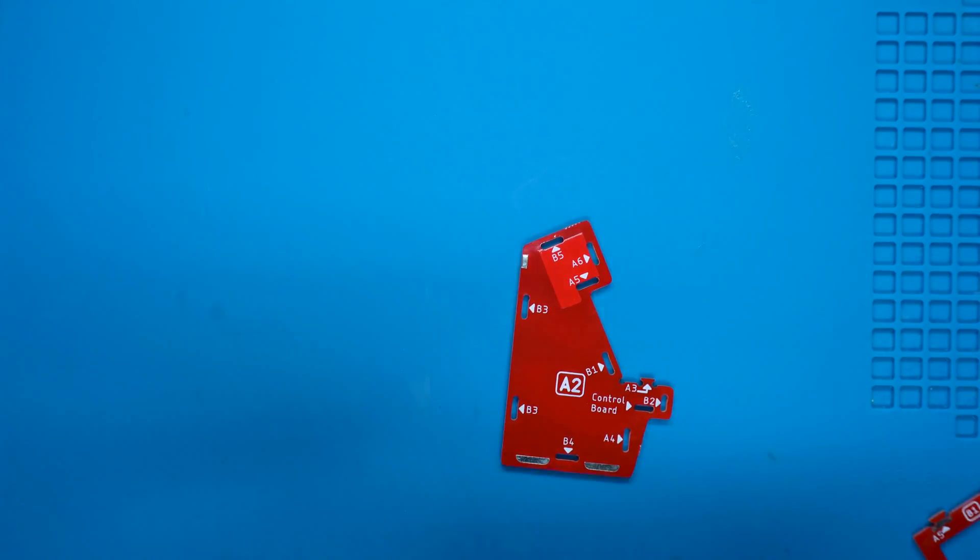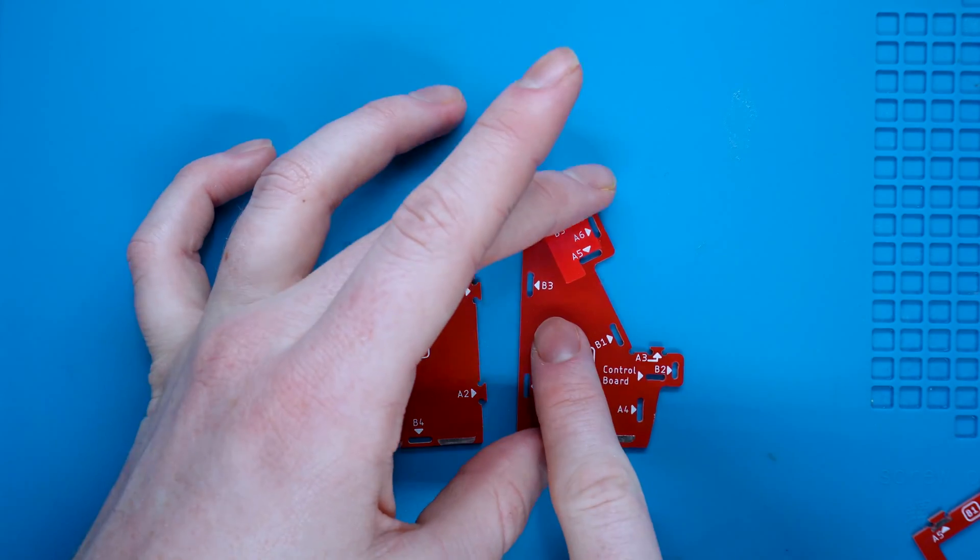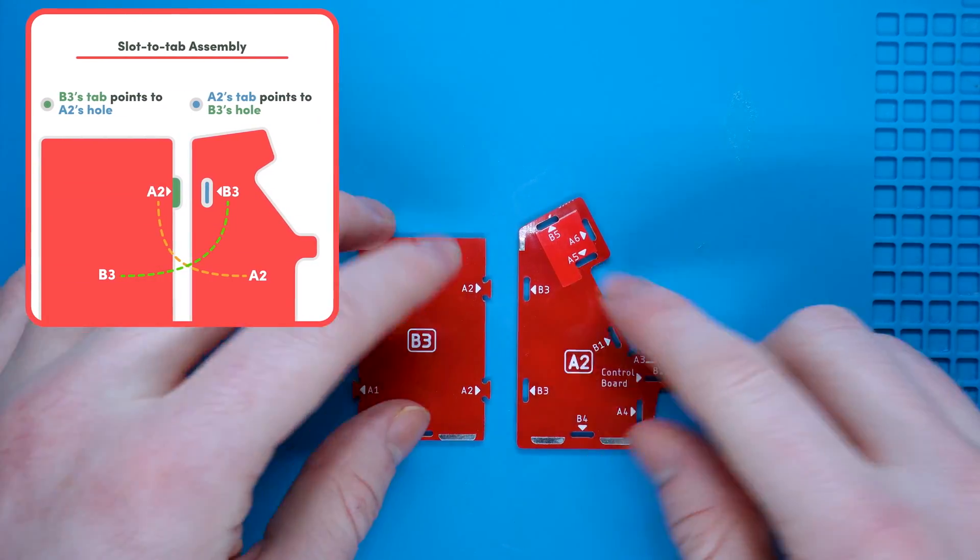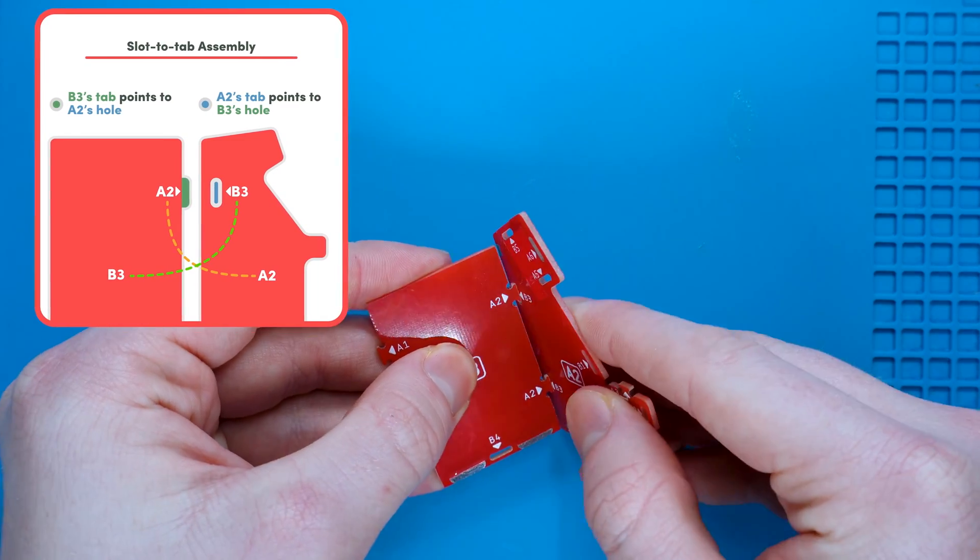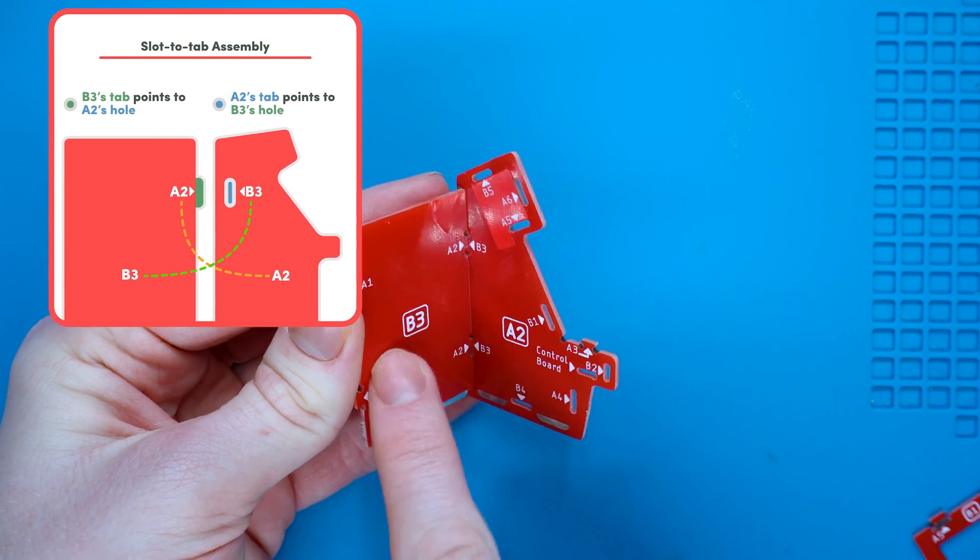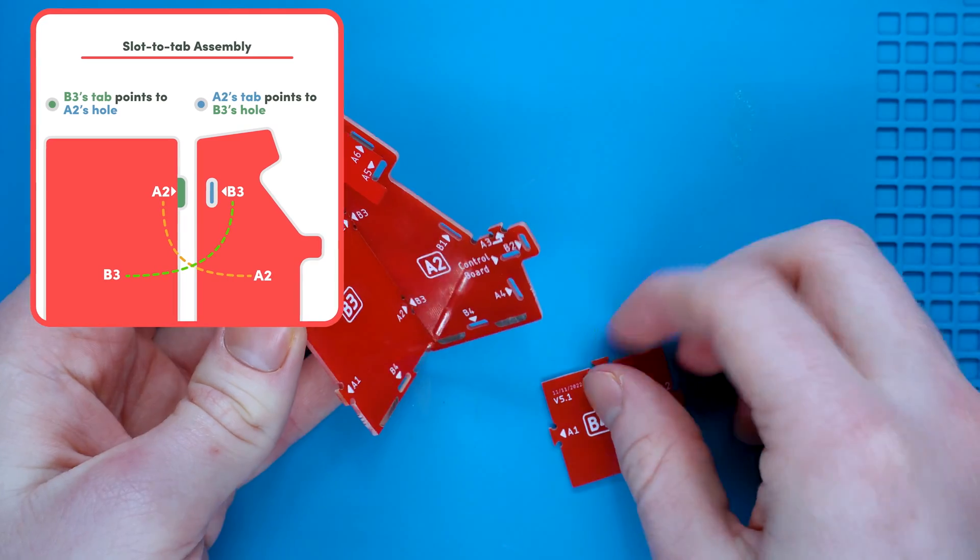The first part you want to grab is A2, which is the right side panel. You also want to grab B3, and as you'll notice, the connections where the side panels need to go are written down. So B3 is written on the hole on A2 and the little pokey thing on B3 has A2 written, so as you can see they can match up.